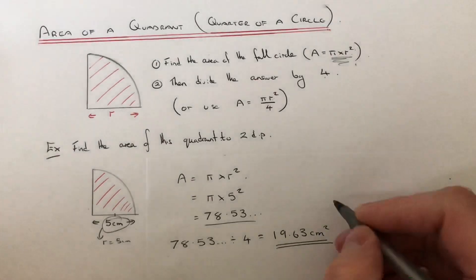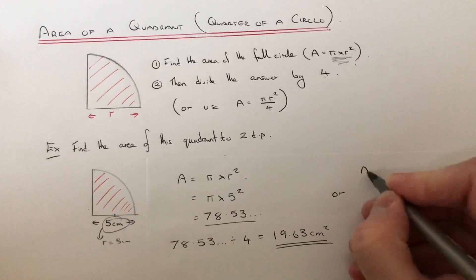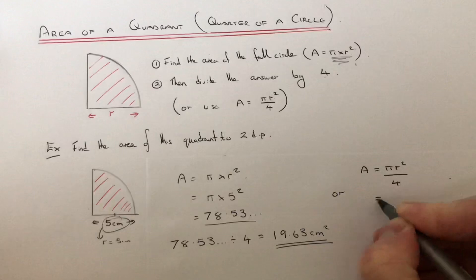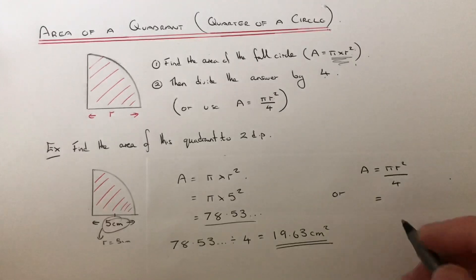And the second way is to just plug it into the formula. A equals pi r squared over 4. So you might prefer this way because it's a little bit quicker. So you're doing the two steps. So again we just put the 5 straight into the formula.